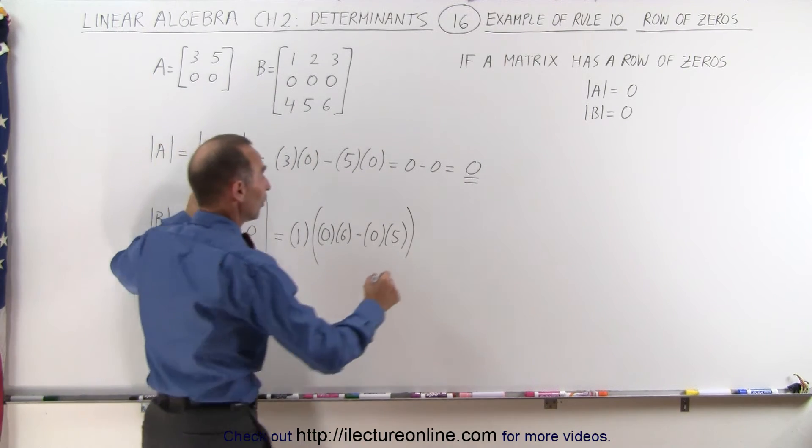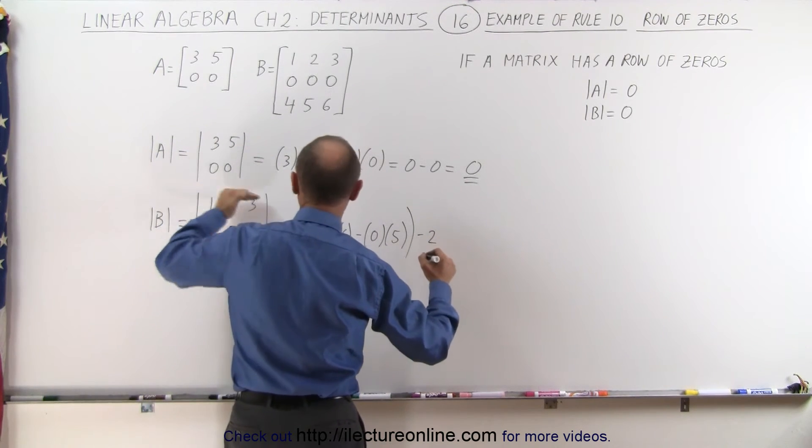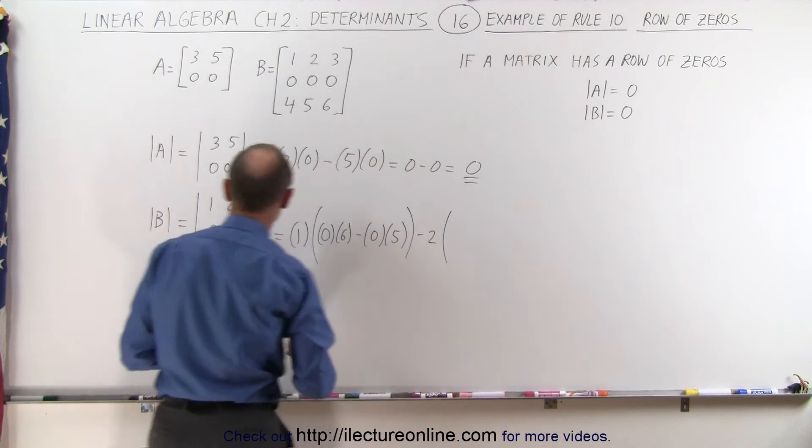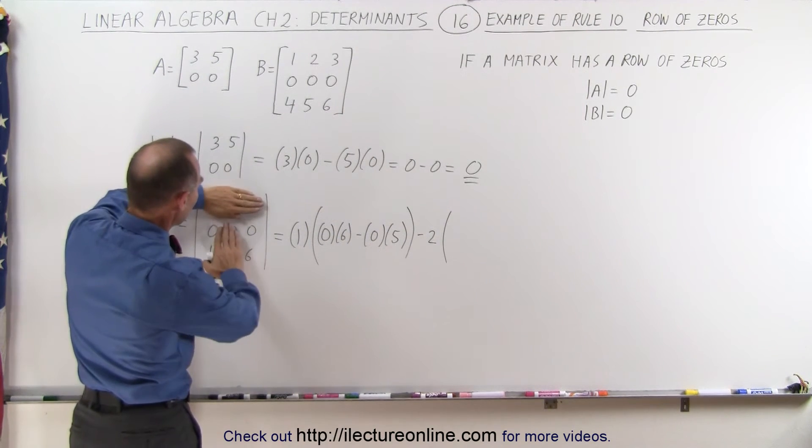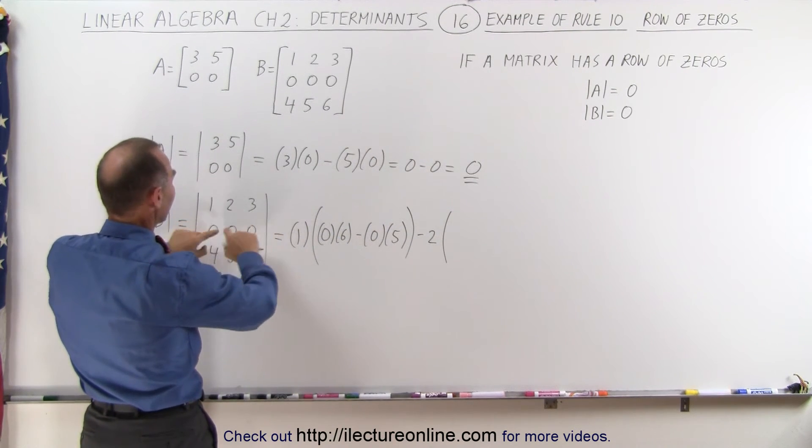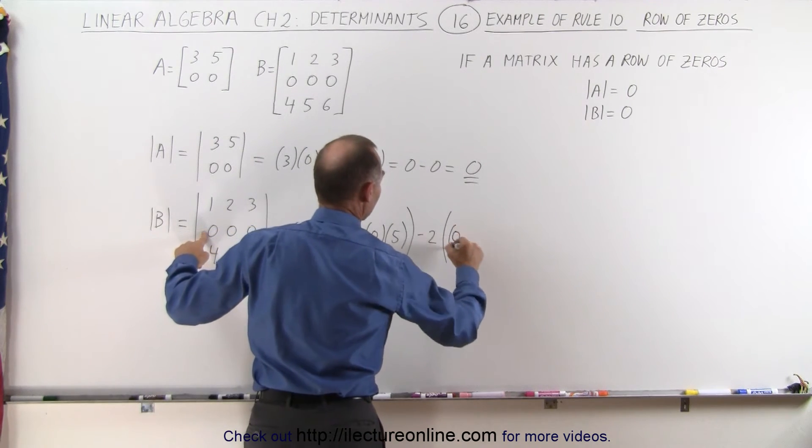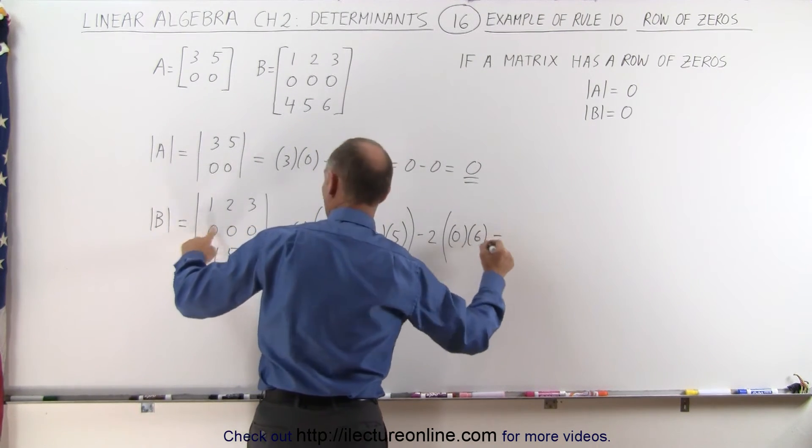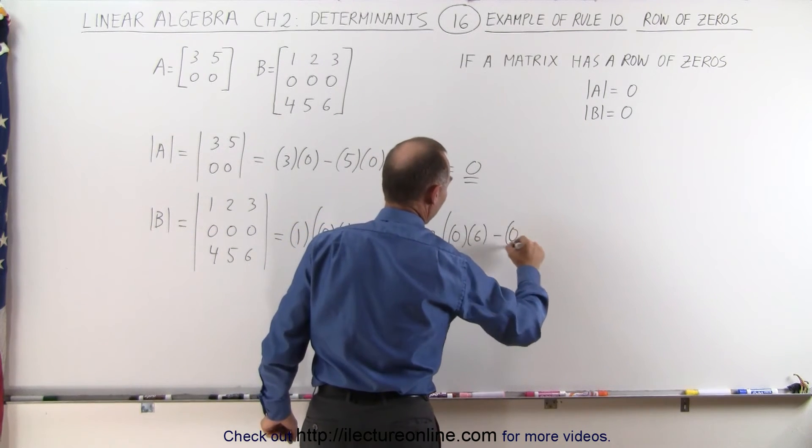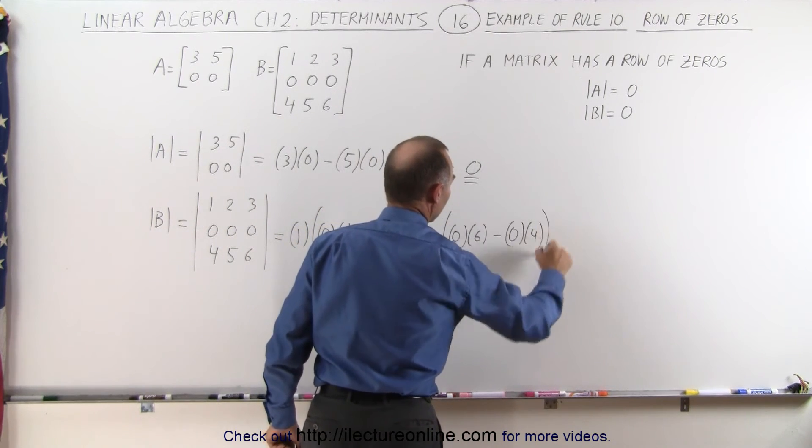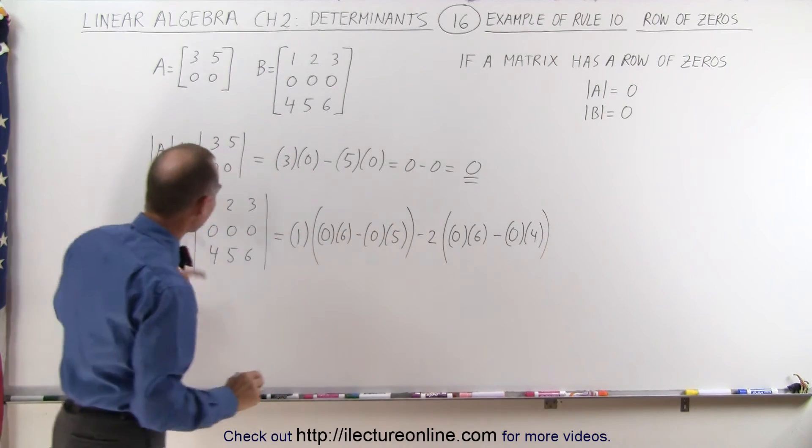Now we'll take the next element, we now get the minus 2 because the signs alternate, and here you get rid of this row and that column, again you have those four elements, one of the rows again is 0, so you get 0 times 6 minus 0 times 4 and again this will equal 0.